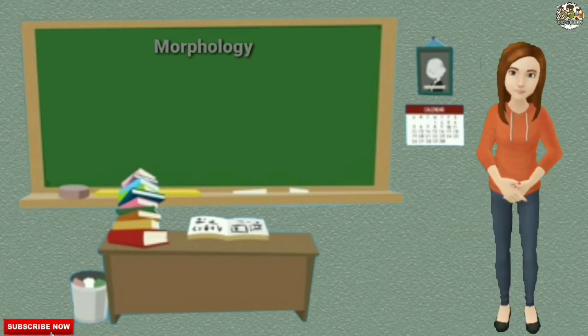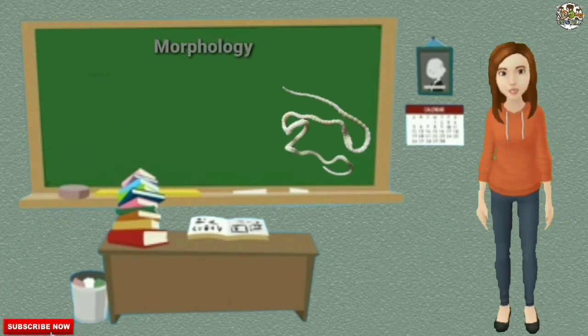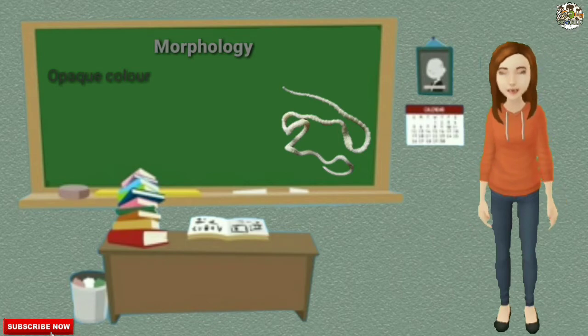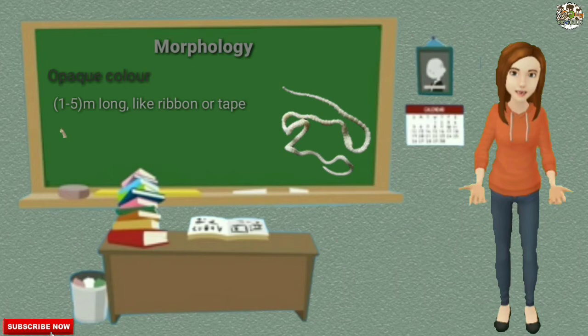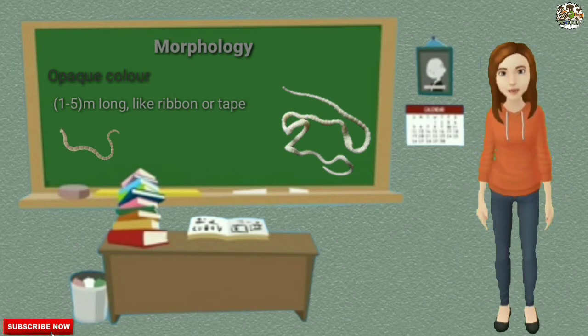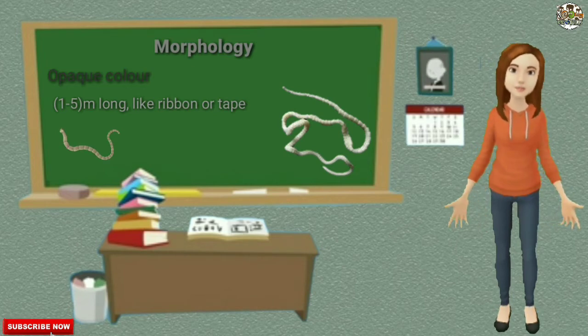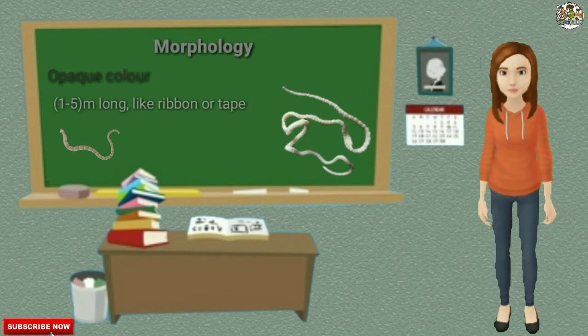Morphology: Tenia solium is usually opaque white in color. The body is 1 to 5 meters long and flattened like a ribbon or tape. The elongated body is extremely narrow anteriorly and gradually broadens towards the posterior end.